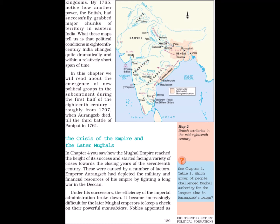What these maps tell us is that political conditions in 18th century India changed quite dramatically and within a relatively short span of time. In this chapter, we will read about the emergence of new political groups in the subcontinent during the first half of the 18th century, roughly from 1707 when Aurangzeb died till the Third Battle of Panipat in 1761.